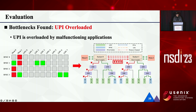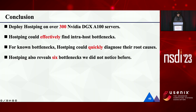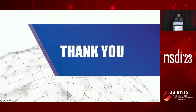So we can see HostPing could accurately find the abnormal link and diagnose the root cause for all these cases. In conclusion, we have deployed HostPing on over 300 A100 servers, and HostPing could effectively find intra-host bottlenecks and quickly diagnose their root causes. Besides, HostPing also revealed six bottlenecks we did not notice before. That's all for my presentation today. Thank you very much, and please feel free to ask any questions.